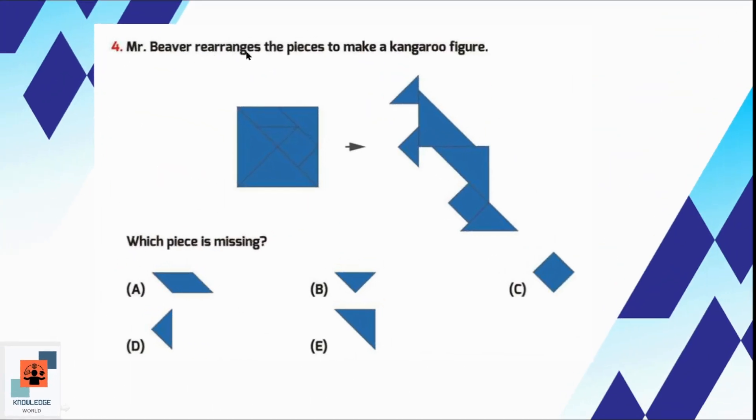Question number 4, Mr. Viewer rearranges the pieces to make a kangaroo figure. Which piece is missing? Here we can see it's a tangram which has 5 triangles, 1 square, and 1 parallelogram. In the given figure, we can find 5 triangles like 1, 2, 3, 4, and 5. Square is also present but the parallelogram is missing. So option A is the correct option.